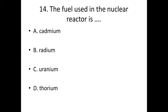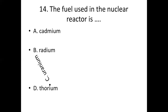Fourteenth bit. The fuel used in the nuclear reactor is: Option A, cadmium. Option B, radium. Option C, uranium. Option D, chromium. Answer: Option C, uranium.